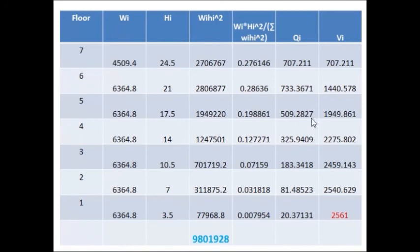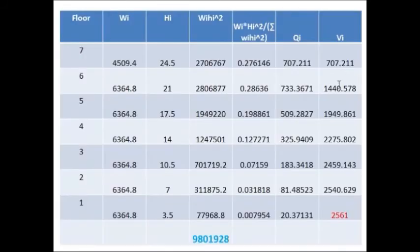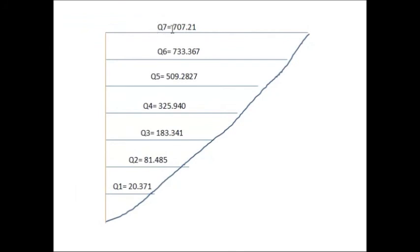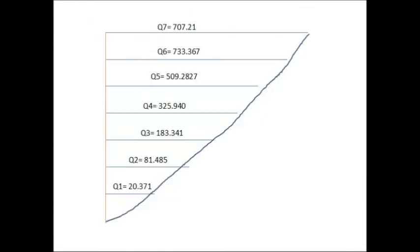Now you can see this diagram which shows the Qi values, which is the lateral force distribution up to seven stories. You can see in the table, the seven-story having lateral distribution load is 707 kilonewtons. And similarly, you can see here it is 707.21 lateral load distribution, and so on.